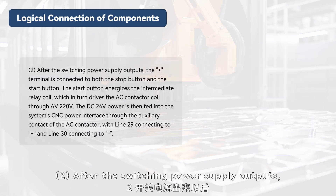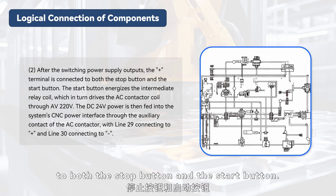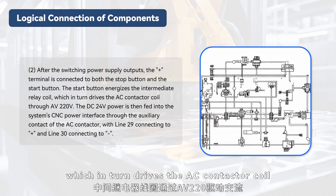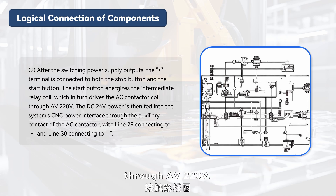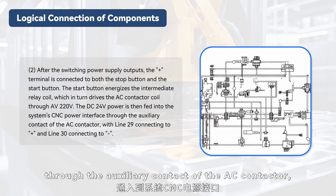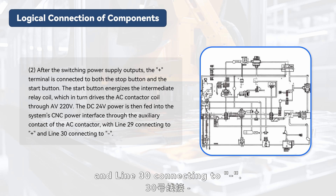Step 2: After the switching power supply outputs, the plus terminal is connected to both the stop button and the start button. The start button energizes the intermediate relay coil, which in turn drives the AC contactor coil through AC 220V. The DC 24V power is then fed into the system's CNC power interface through the auxiliary contact of the AC contactor, with line 29 connecting to plus and line 30 connecting to minus.